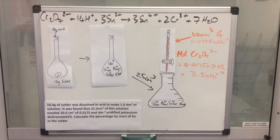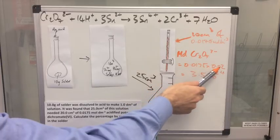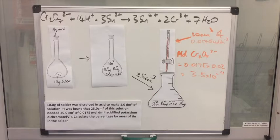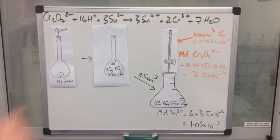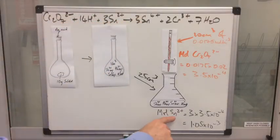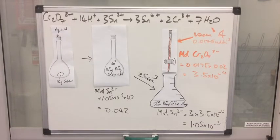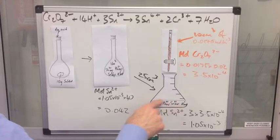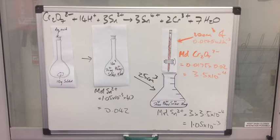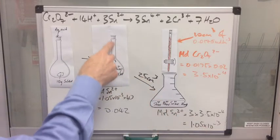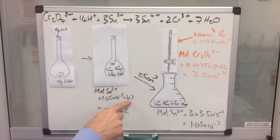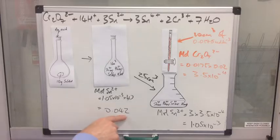First, we calculate the moles of dichromate ions used in the titration — concentration times volume in dm³ gives us 3.5 × 10⁻⁴ mol. The mole ratio in the redox equation tells us to multiply the moles of dichromate by 3 to get the moles of Sn2+, which comes out at 1.05 × 10⁻³. Now for the tricky part: those are the moles in the 25 cm³ aliquot, but the original solution was 1000 cm³, so we multiply by 40.